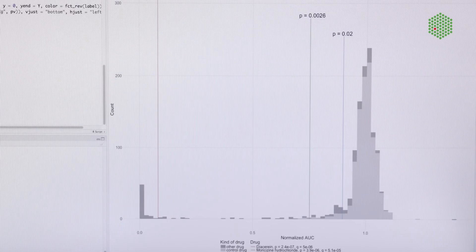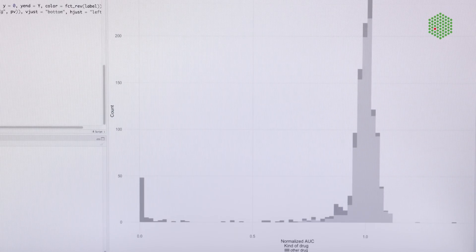Once I have this, I basically get the distribution of growth, and then I can check for any individual drug treatment how different is it from this distribution of normal growth.